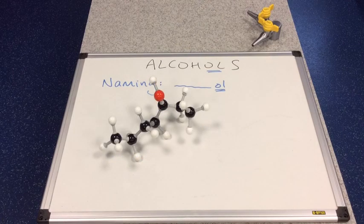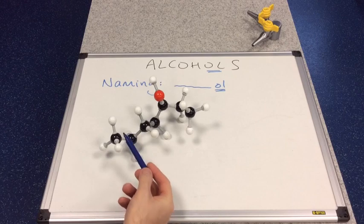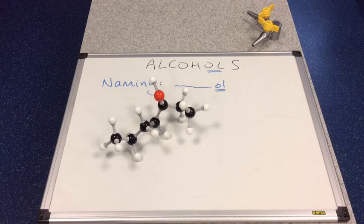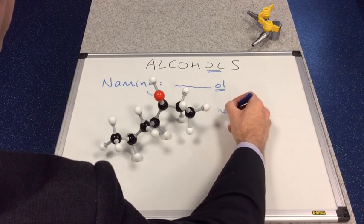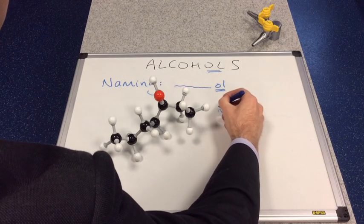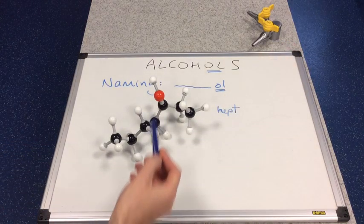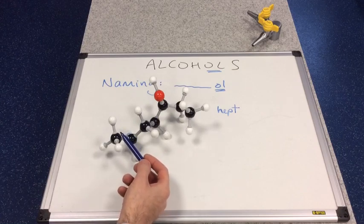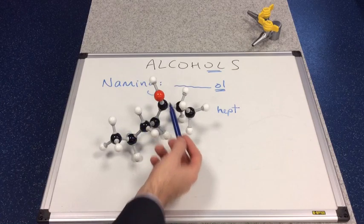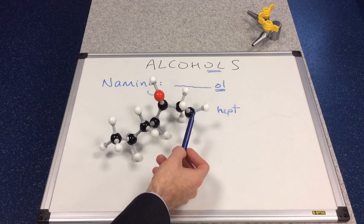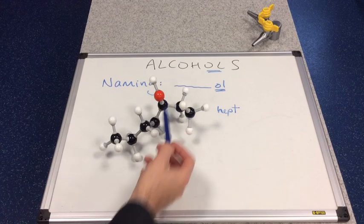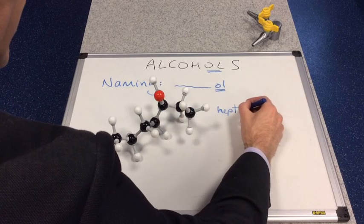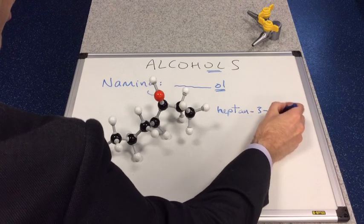We'll go for a longer alcohol now. This chain has 7 carbons, so that would be 'hept'. Now where's the hydroxyl group? If we count from the left, it's on carbon 5; but if we count from the right, it's on carbon 3. The rule is we must go with the lower number, so this will be called heptan-3-ol.